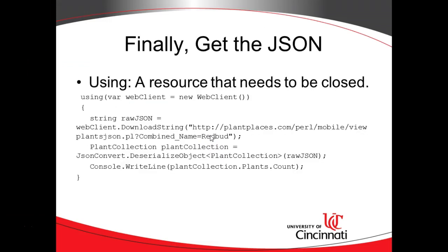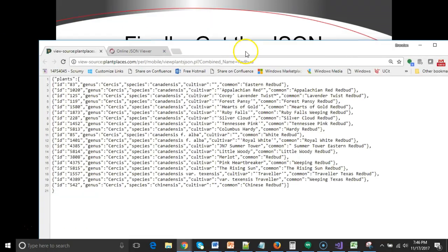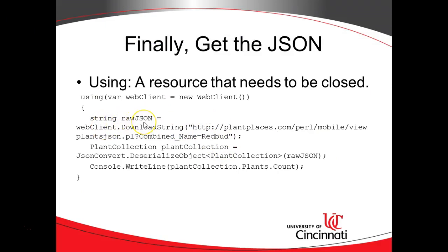Now we need to actually retrieve the JSON stream, and we're going to do that with a using block. Using is what we use when we have some kind of resource that needs to be closed. So, using a new WebClient — WebClient is how we can download data from the internet. The first line: string rawJson equals webClient.DownloadString, which gets the JSON data at the given link and stores it into the string rawJson. Then plantCollection equals JsonConvert.DeserializeObject, which parses the JSON. Once parsed, we can use dot notation to access the collection of plants.